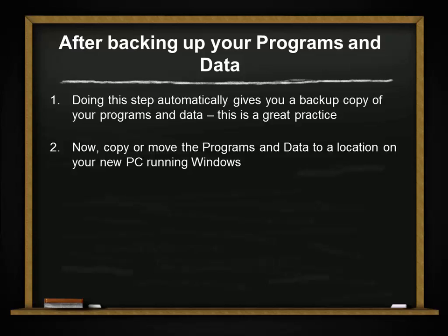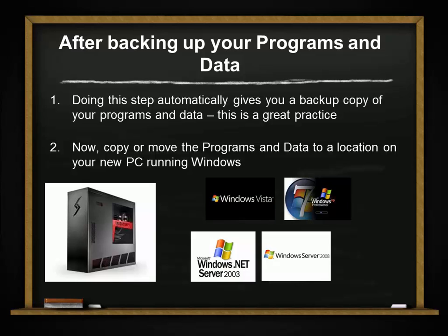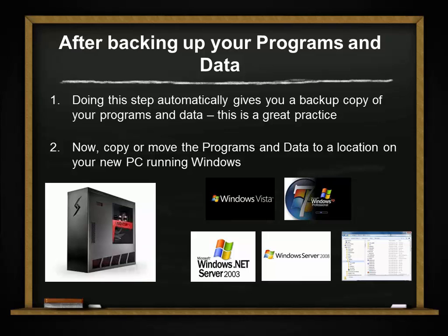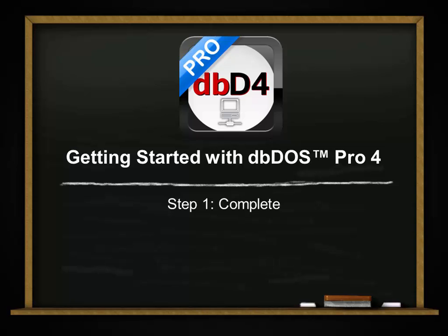Now you want to move those programs and data to your new PC. Just take that thumb drive, archive, zip, or floppy, plug it into the new machine, and copy all of your programs, data, applications, and any directories you need for your MS-DOS based applications. Once you have that copied over to the new system, you're pretty much done. That's the first step in getting ready to use DBDOS Pro 4. Thanks a lot, have a good day!